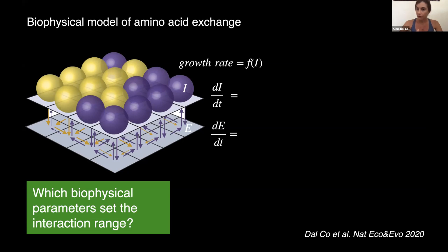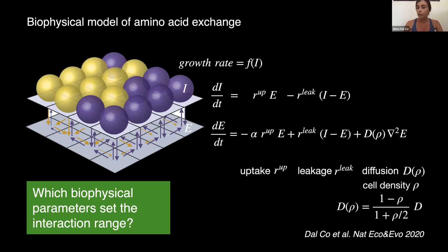So the internal and external concentration of amino acids change because cells take up amino acids from the environment, leak amino acids in the environment where they diffuse. And a small note is that the diffusion also depends on the cellular density within these chambers. So we correct with this factor. Now from these biochemical parameters, what are the ones that really set the interaction range between cells?